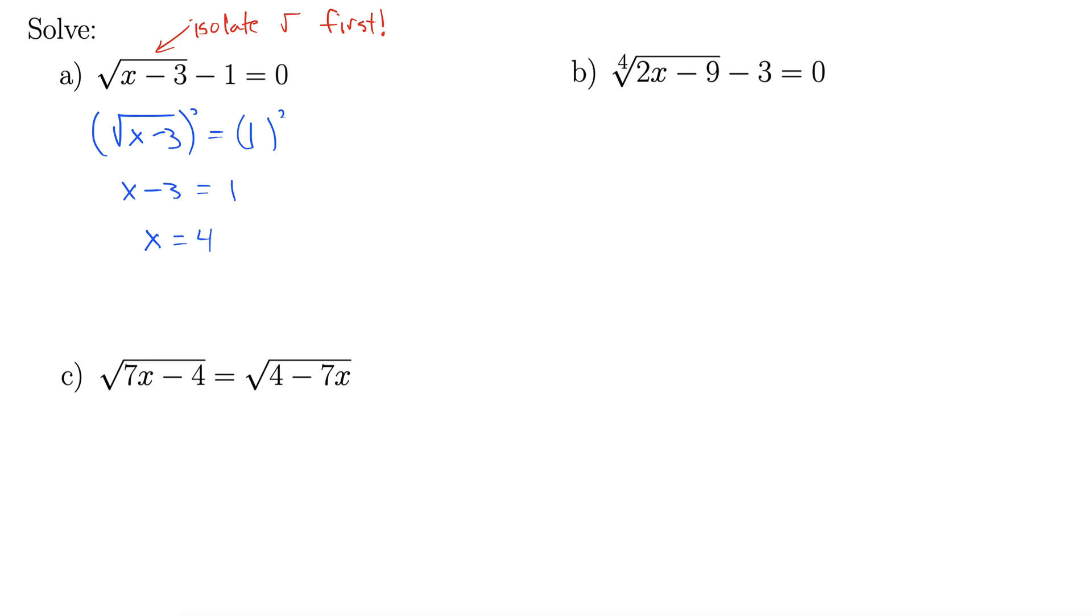Now, with radical equations, you always have to check your answers. Because these will give you extraneous solutions. Extraneous solutions are when you do all the work right, and your answer is perfect, and you plug it in, and it just doesn't work. It seems like it's going to be a solution, but it's actually not. We call those extraneous solutions.